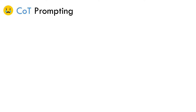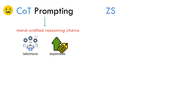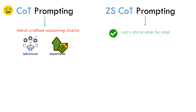COT prompting with examples having handcrafted reasoning chains does well. But the main disadvantage of COT prompting is the requirement of handcrafted reasoning chains, because generating reasoning chains manually is a laborious and expensive task. Zero-shot COT prompting eliminates this requirement by using the magical phrase 'let's think step by step,' which instructs the LLM to automatically generate reasoning chains. However, sometimes the generated reasoning chains can be inaccurate, which impacts LLM performance.